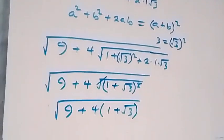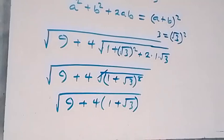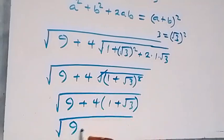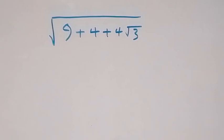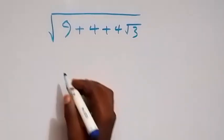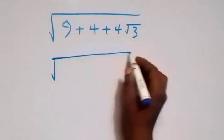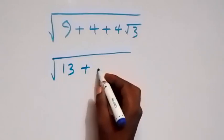Also, this 4 will open this bracket here, and this will give us square root of 9 plus 4 plus 4 root 3. From here, 9 plus 4 is 13, so we can write this as square root of 13 plus 4 root 3.